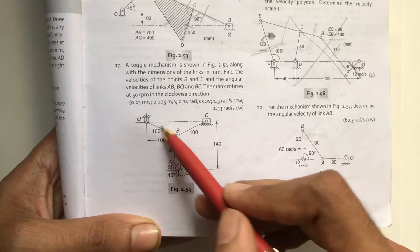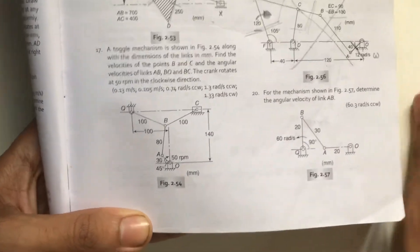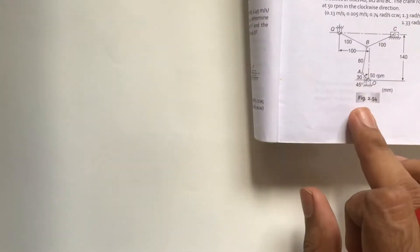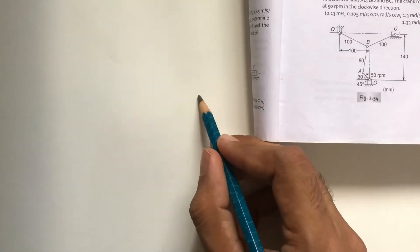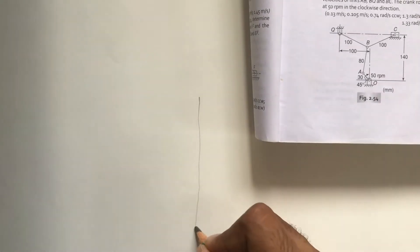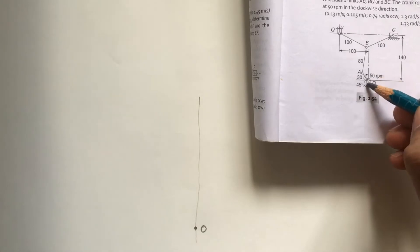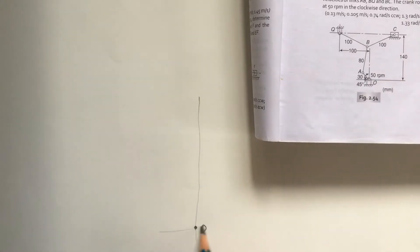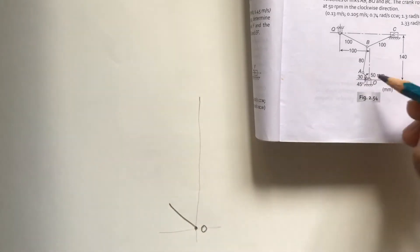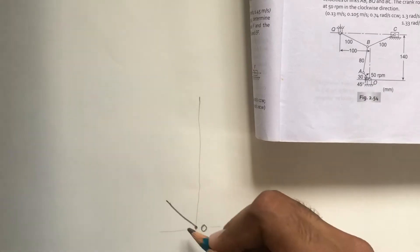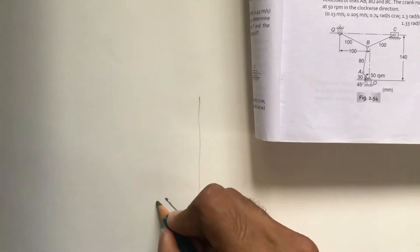First, we will draw a velocity diagram according to the given configuration diagram. Draw one approximate vertical line and locate point O. Measure a 45-degree angle with respect to the horizontal line — that gives point A, equal to 30 mm (3 cm).